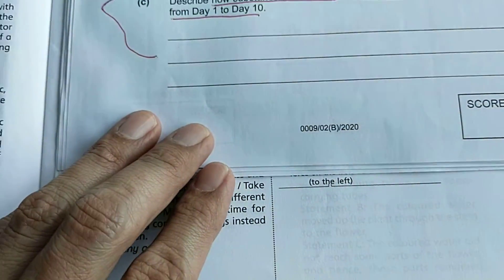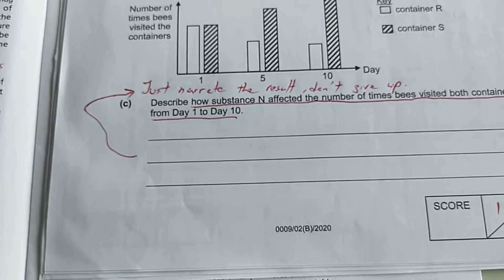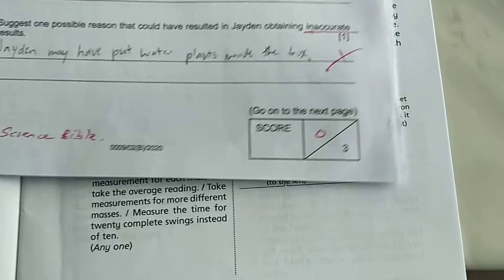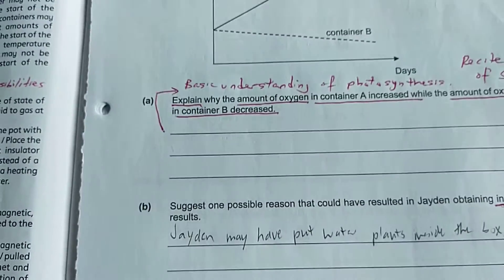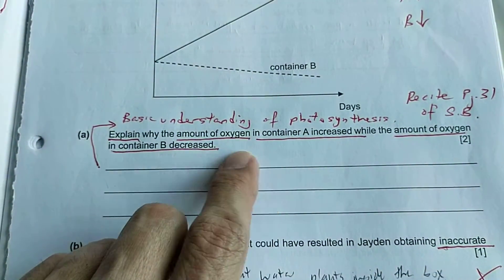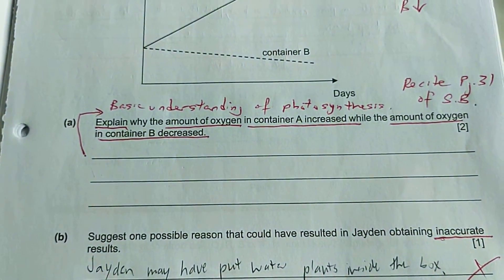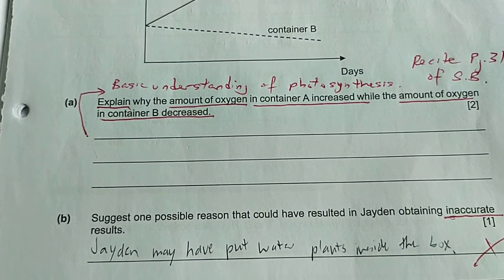Let's continue with these questions. They have to explain why the amount of oxygen in A increased, that's one point, and why the amount of oxygen decreased in B, that's the second point.